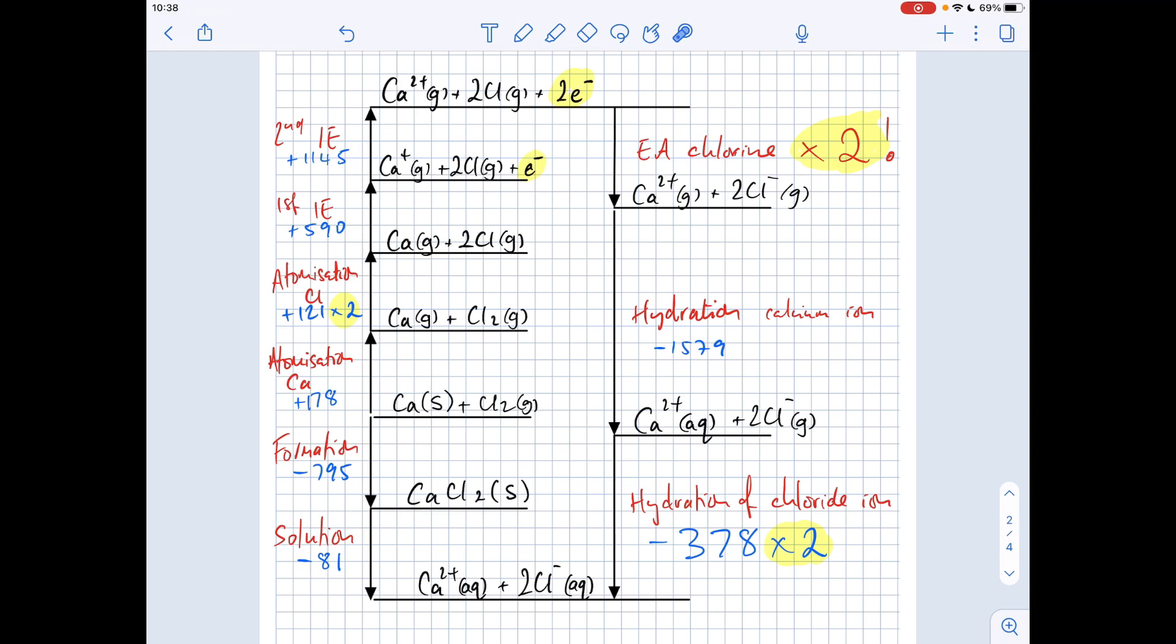Okay, so once we've got the gaseous atoms, we ionize them. So we're going to do the first ionization energy of calcium. That electron there is often missed off. So be careful. The second ionization energy. So we gain two electrons. We now need to ionize the chlorine. So that's the electron affinity. But we need to double that because there are two moles of chlorine in the cycle. So when we come to the calculation, the number we get for that step will be two times the electron affinity. So we'd have to halve it at the end.